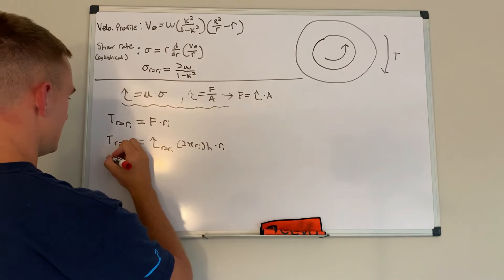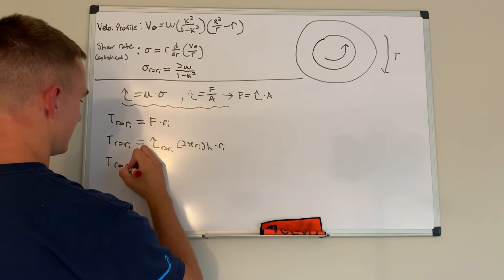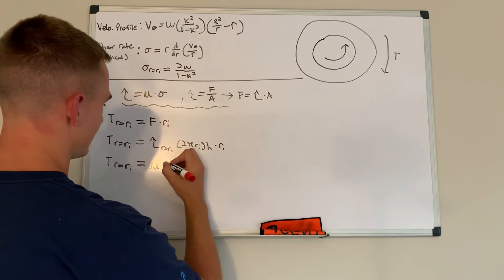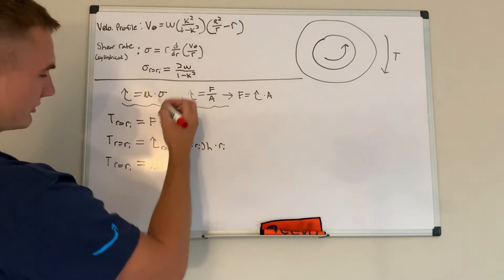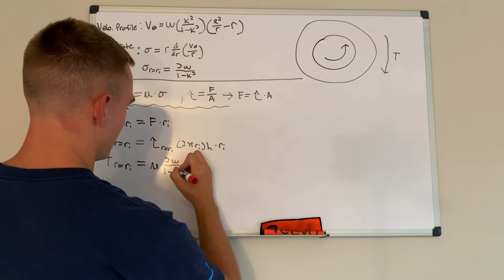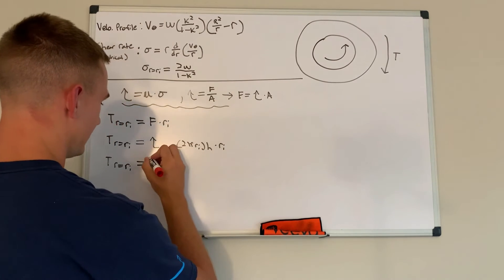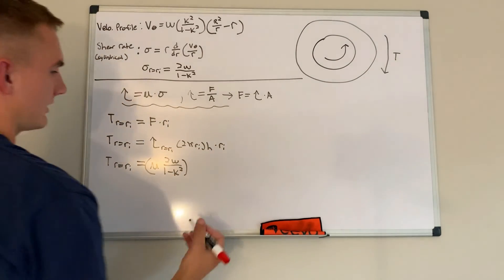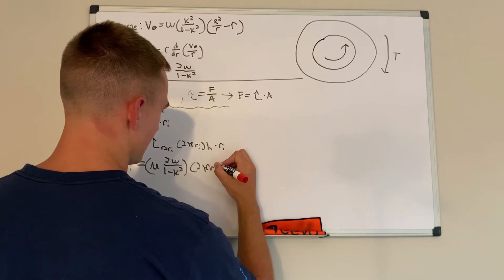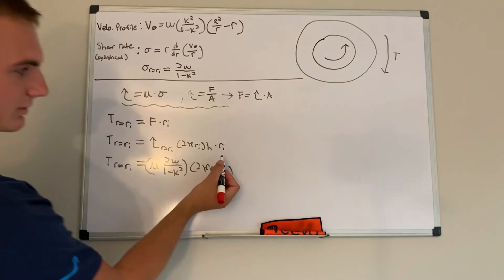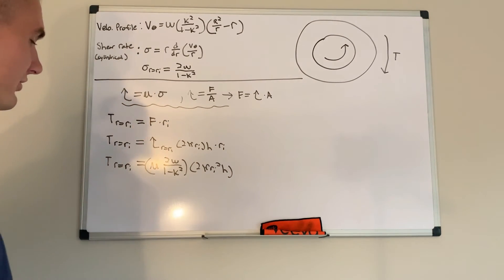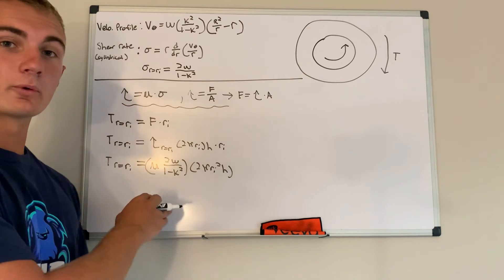So the torque at the inner cylinder is equal to viscosity times 2 omega over (1 minus k-squared) — using the magnitude of the shear rate we found — multiplied by the area 2π·Ri-squared times height h. We bring in the Ri to give Ri-squared. This is the full torque expression for the inner cylinder.